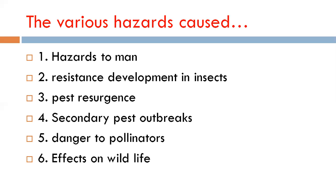Danger to pollinators is another hazard. Many pollinators like honeybees, bumblebees, butterflies, and other insects responsible for pollination in the field are affected by pesticide use, resulting in poor fruit and seed set. This hazard occurs not only through direct contact poisoning but also when bees collect contaminated nectar and return to the hive, affecting the next generation.